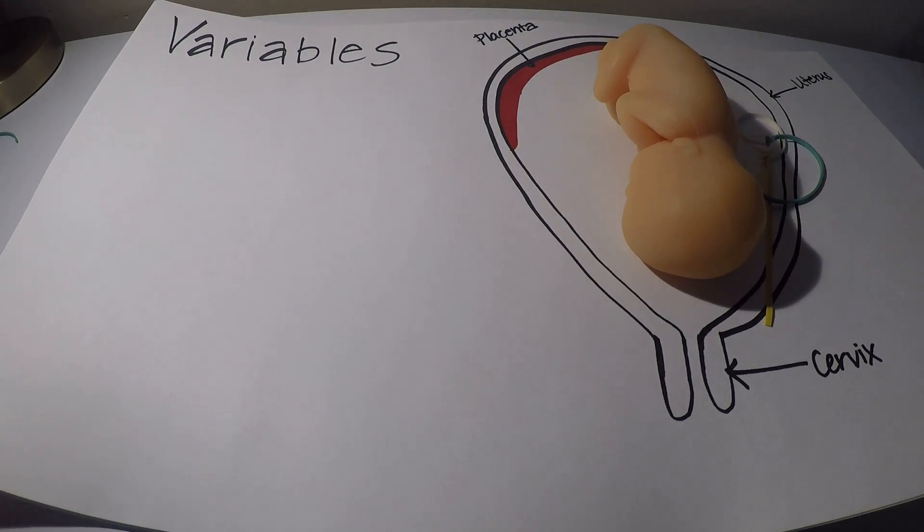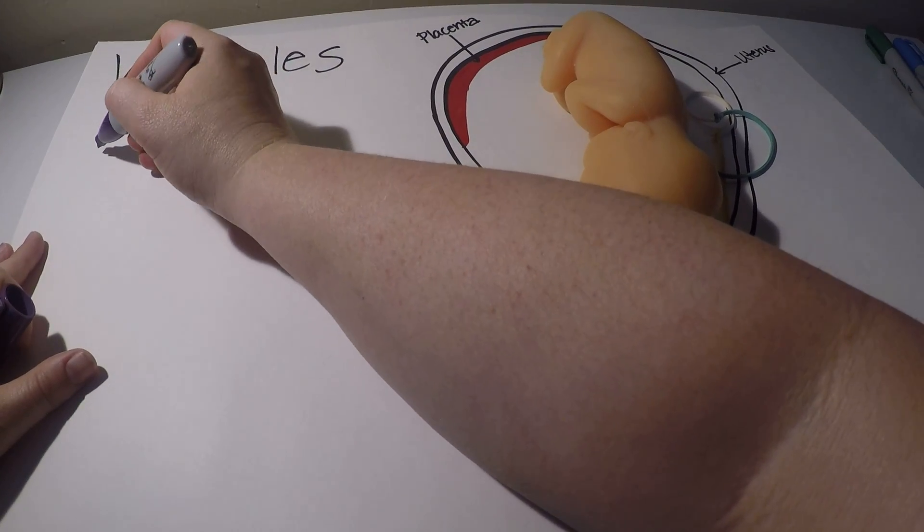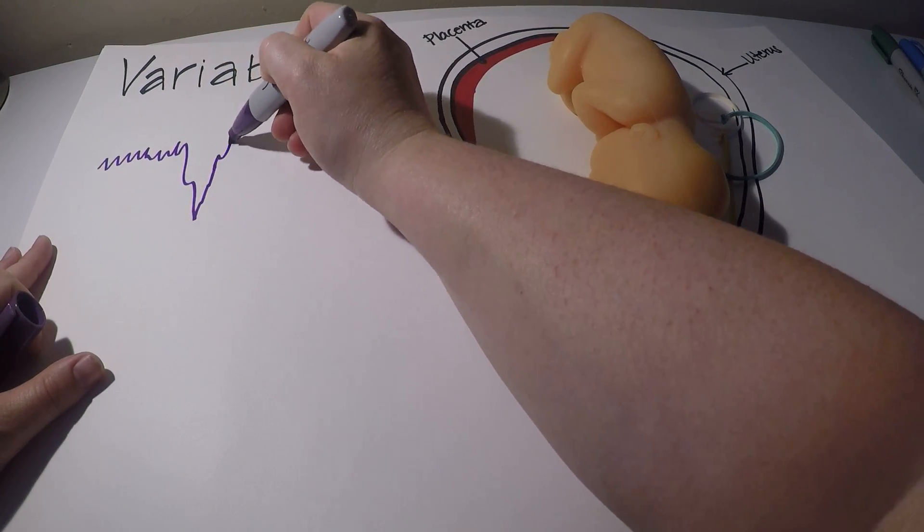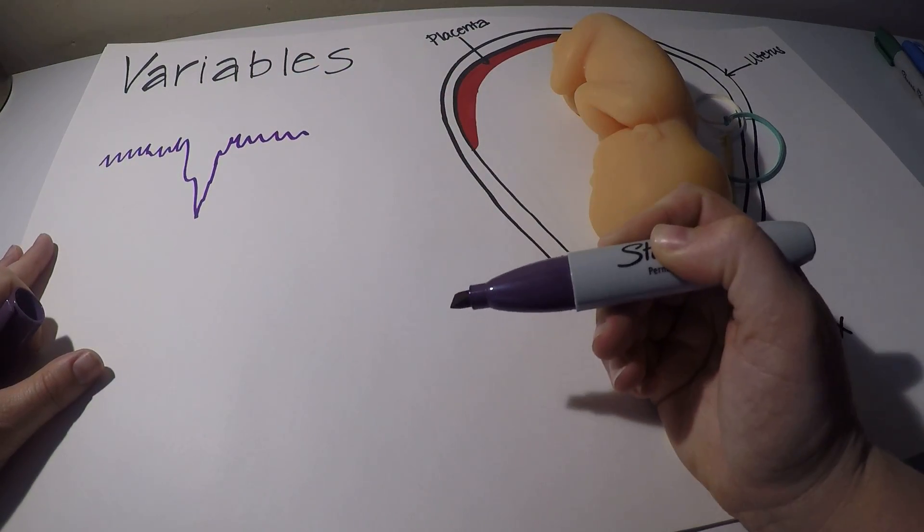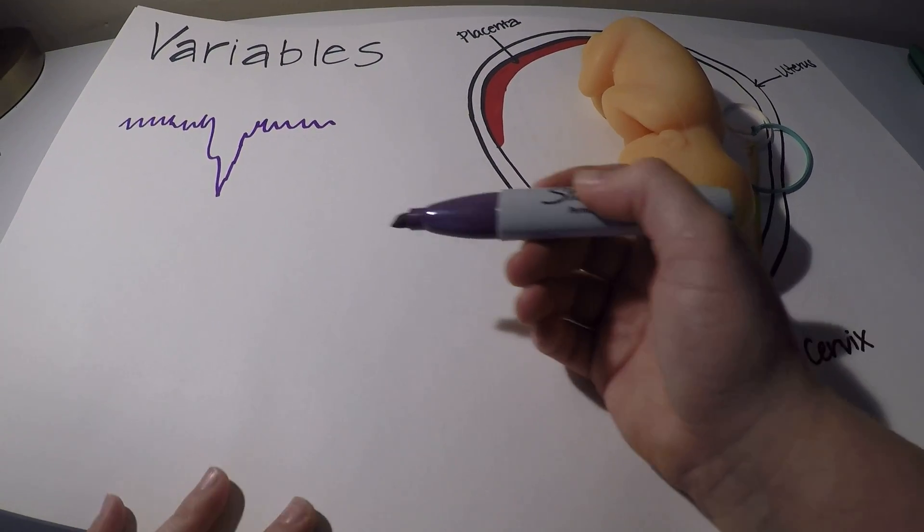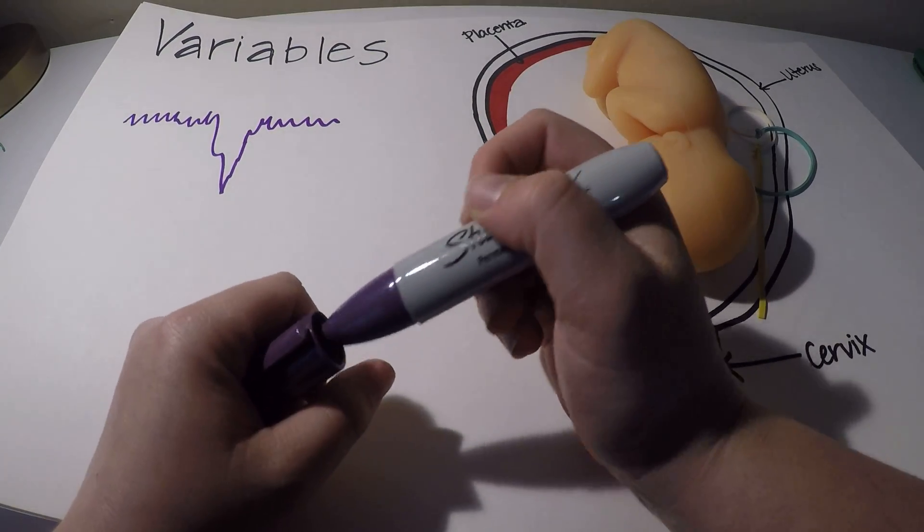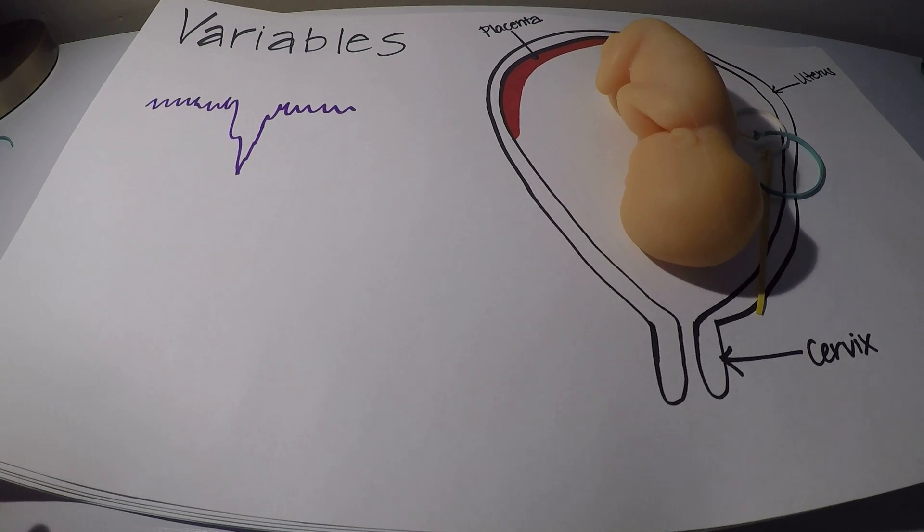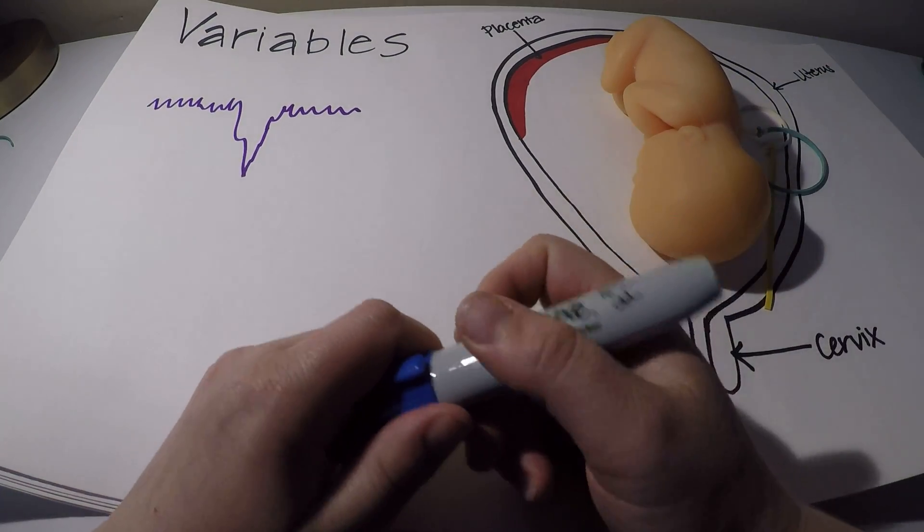So when you're looking at a variable deceleration on the monitor, it's going to be pretty quick. It's going to kind of be abrupt and a very quick recovery. It's going to look something like that. The decelerations can occur with contractions or without the contractions. It doesn't really matter. However, if it's happening with every contraction that can be suggestive of a nuchal cord.